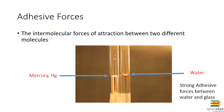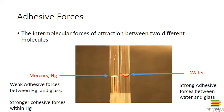Mercury, on the other hand, has stronger cohesive forces than adhesive forces. So there is very little attraction for the glass, but strong attraction between the atoms of mercury within the liquid. As a result, the mercury doesn't creep up the glass, but we do get a convex spherical shape because of the surface tension of the mercury.